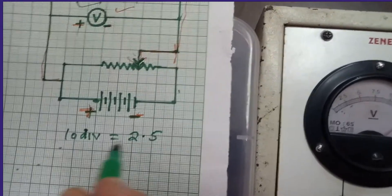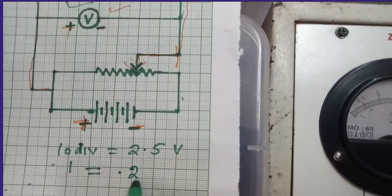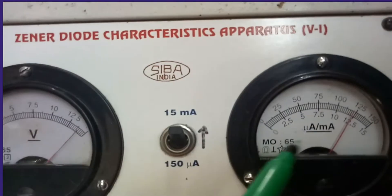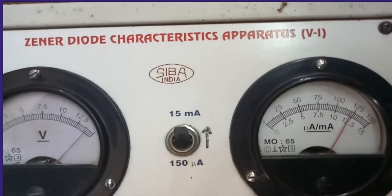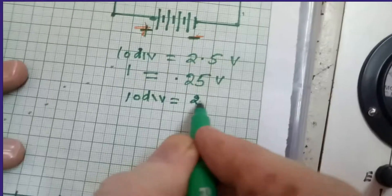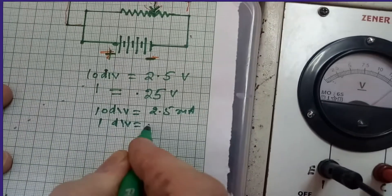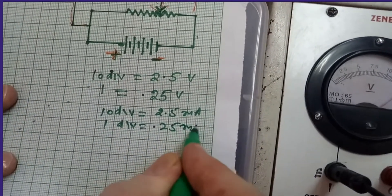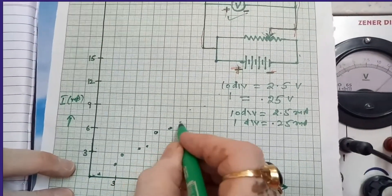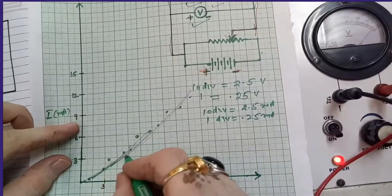10 divisions of the voltmeter equals 2.5 volts, so one division equals 0.25 volts. 10 divisions of the milliammeter equals 2.5 milliamperes, and one division equals 0.25 milliamperes.